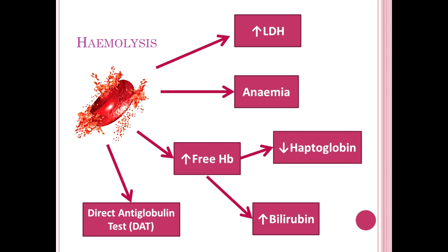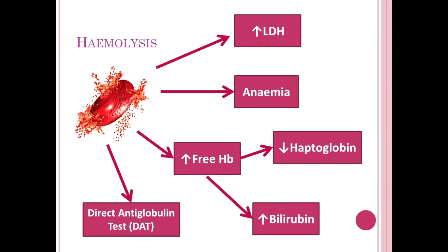Haptoglobin is a liver-produced protein designed to mop up free hemoglobin, which can be damaging to tissues. When haptoglobin binds free hemoglobin, it is cleared from circulation via renal excretion, so haptoglobin levels drop. In significant hemolysis, haptoglobin should be undetectable. People with liver disease usually have low but still detectable haptoglobin, making hemolysis harder to diagnose. Bilirubin is released as a breakdown product of the heme part of hemoglobin and rises in hemolysis — a more sensitive marker. These markers are typically used together, particularly in intravascular hemolysis.